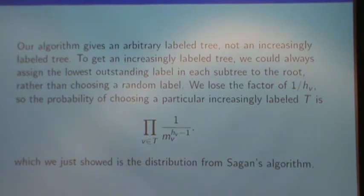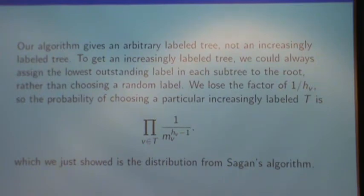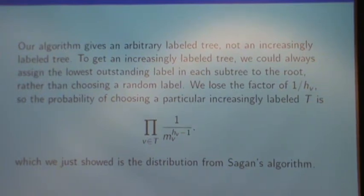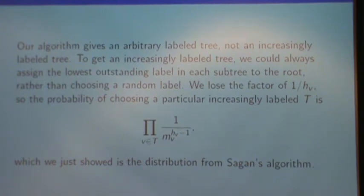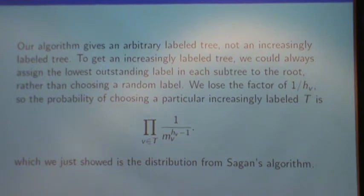Now, we lose the 1 over hv factorial. So, the probability of choosing a particular increasingly labeled T is the product of 1 over mv to the hv minus 1. And we just showed that's the same distribution from Sagan's algorithm. And we don't even need to know about Sagan's algorithm to say, you multiply this by the number of increasingly labeled trees to get the probability and get Yang's formula.